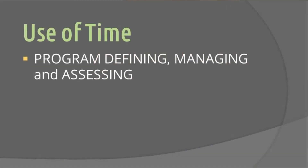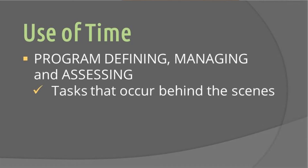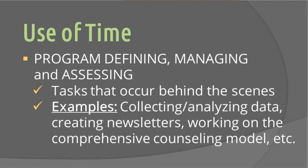The next time use category is called program defining, managing, and assessing. Like the previous two categories, these activities align to the school counseling program's goals, but are tasks that occur behind the scenes. These activities might include collecting and analyzing student data, creating the monthly parent newsletter, or working on a comprehensive counseling model like you're doing right now.